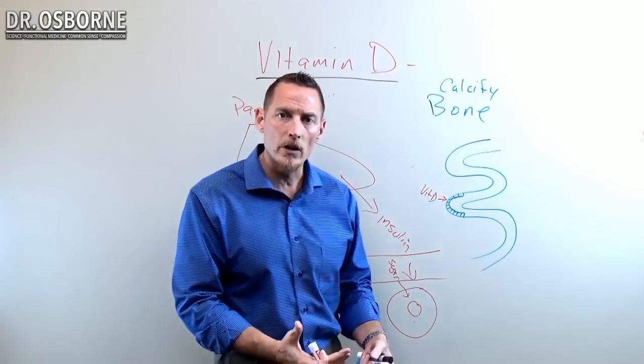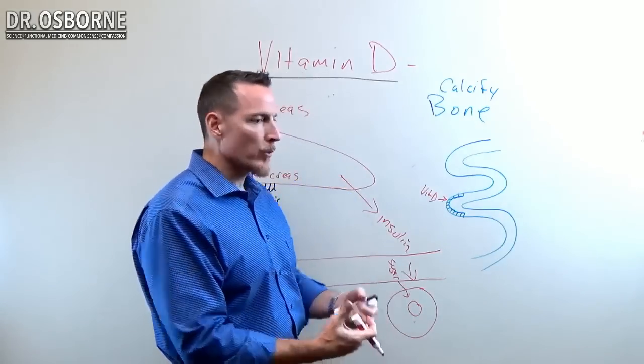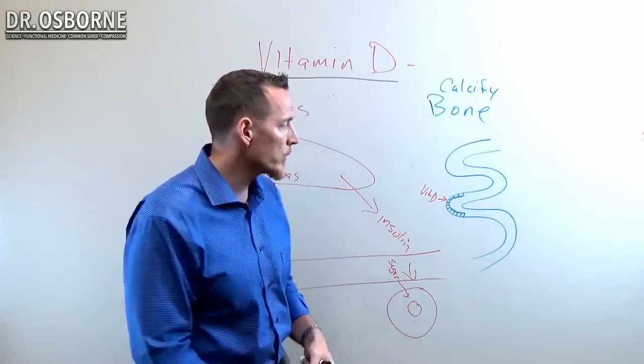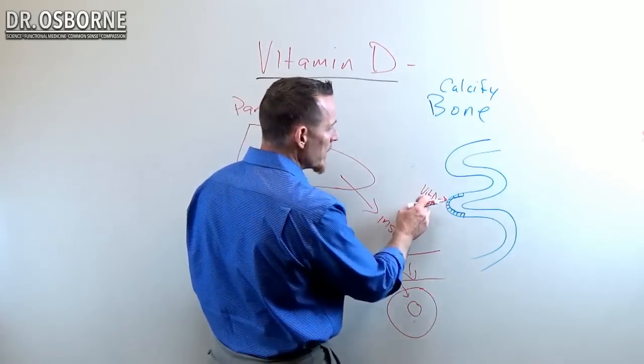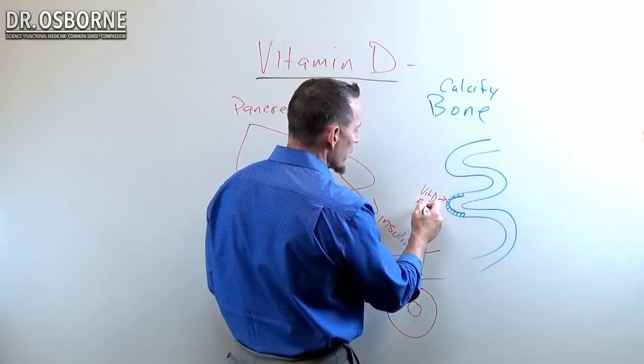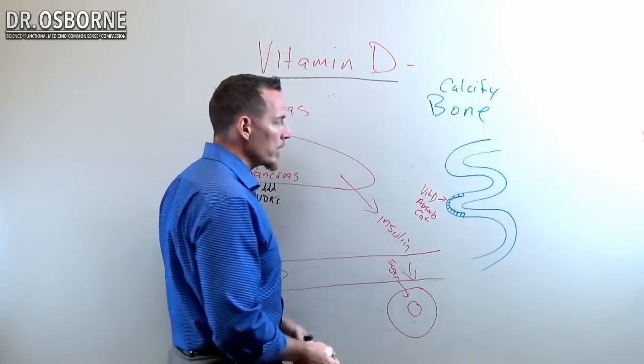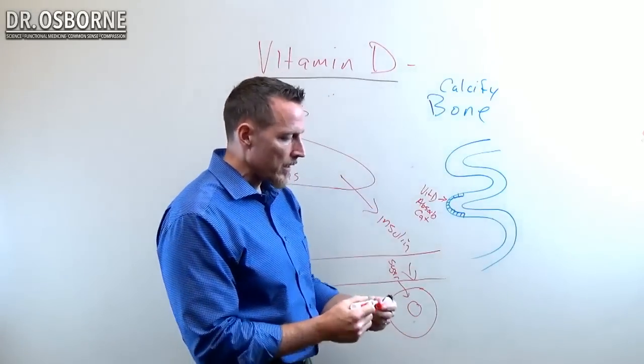Osteomalacia is another condition. Rickets and osteomalacia are the same thing—we call it rickets when it's in kids, osteomalacia when it's an adult. Remember, vitamin D tells your small intestine to absorb calcium. If you don't have adequate vitamin D, that calcium you're eating may not be getting absorbed, and that's going to affect and impact your bone.